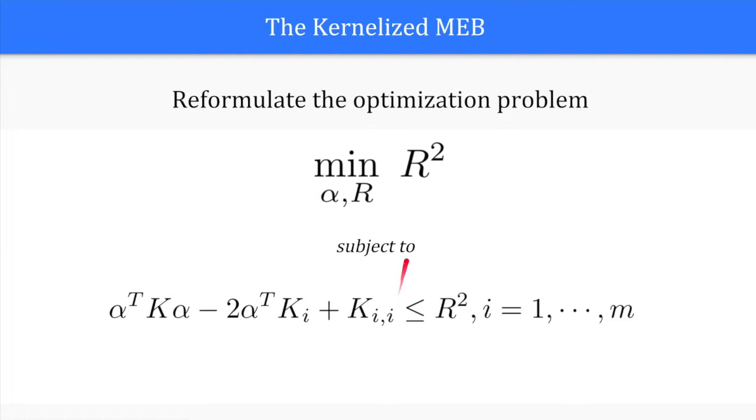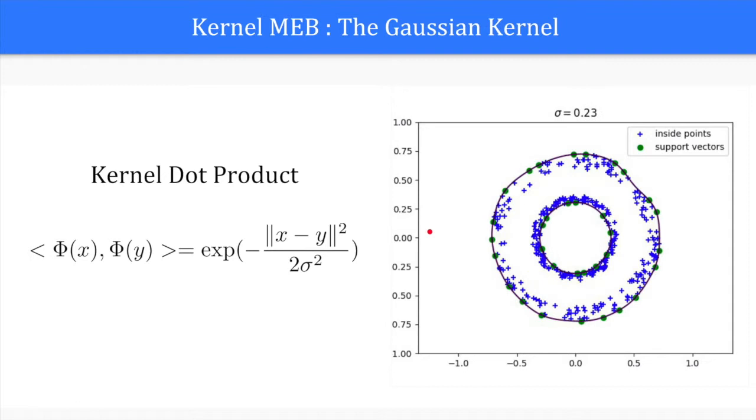Here we compute the minimum enclosing ball with a Gaussian kernel, parametrized by its bandwidth sigma, and project this ball into the input space. We can see how different values of sigma give different contours for the enclosing ball.